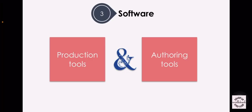The third requirement that must be fulfilled in multimedia development is software. Multimedia software provides specific instructions to the hardware for performing tasks. The two types of software needed are production tools and authoring tools. Production tools are used to develop multimedia elements — for example, Adobe Photoshop is used to manipulate images and Audacity is used to produce and edit audio. Authoring tools gather all elements into one multimedia project.